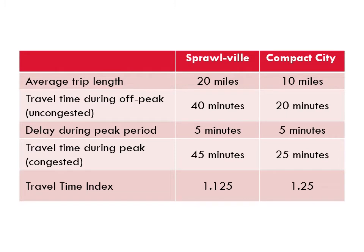To understand the problems with relying exclusively on the Travel Time Index, let's compare a hypothetical pair of cities: Sprawlville and a compact city. In Sprawlville, destinations are far apart, so the average trip is 20 miles in length and takes about 40 minutes in the off-peak. In the compact city, destinations are closer together, and the average trip is just 10 miles and takes 20 minutes during the off-peak.